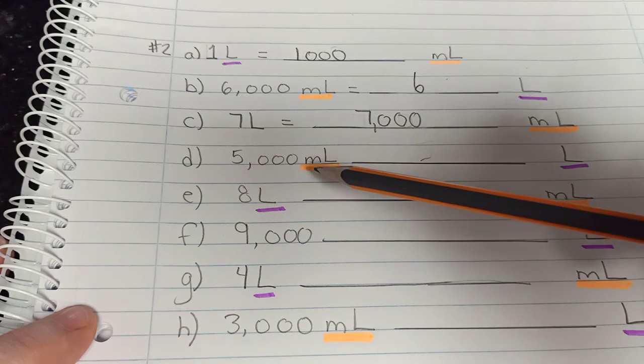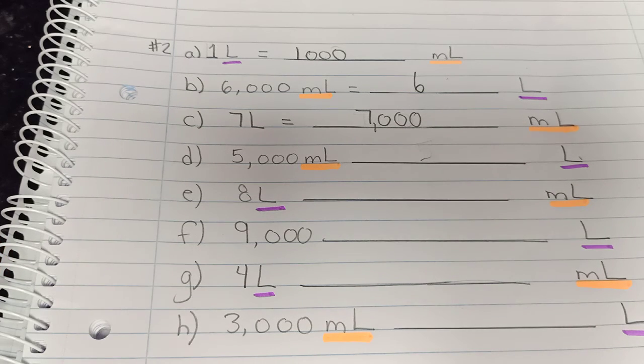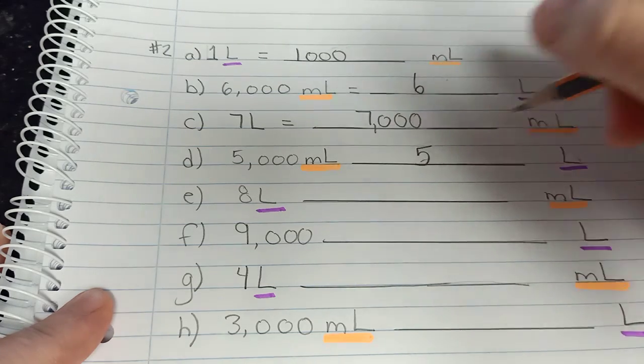Then I have 5,000 milliliters. How many liters would that be? It should be jumping out at you right now. Oh okay, 5,000 milliliters, that's the same as five liters.